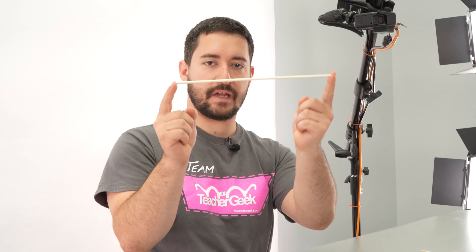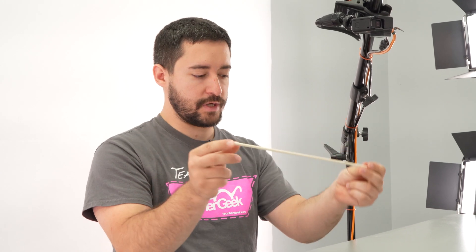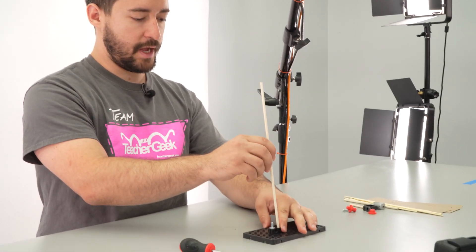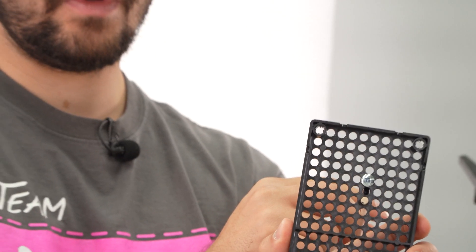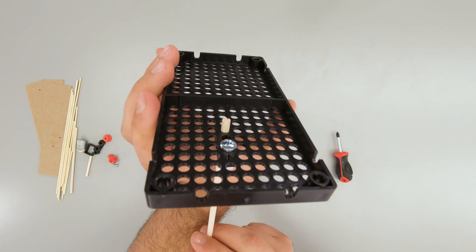Next we're going to add our longest dowel, the 30 centimeter 12 inch dowel, to the other hole in the block. We're just going to wiggle that in. And you want it to go through the bottom of the hole plate, like this, to help hold it stable so it doesn't twist around.